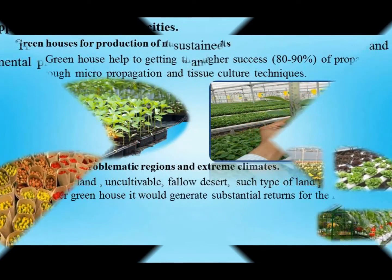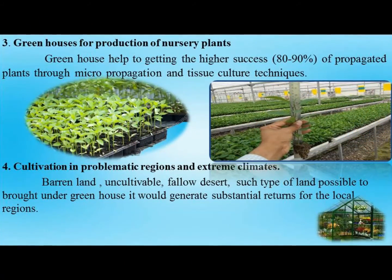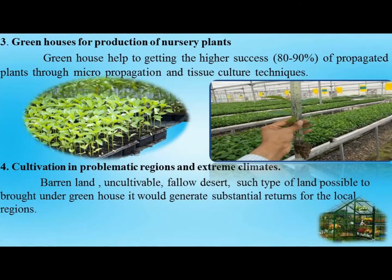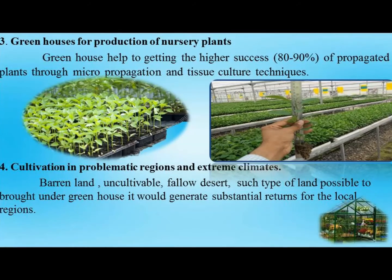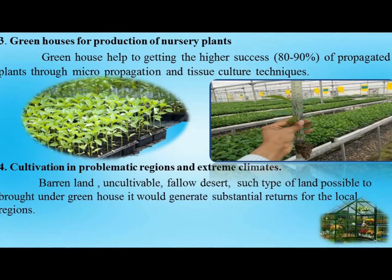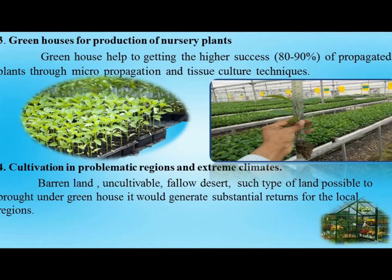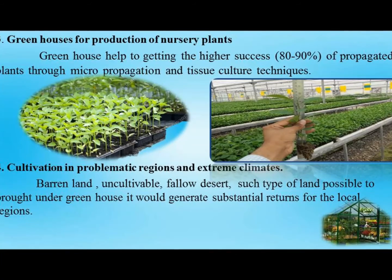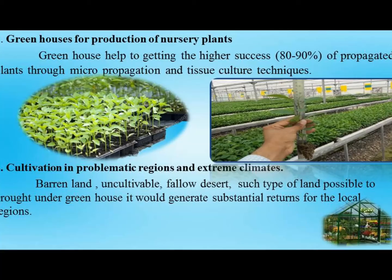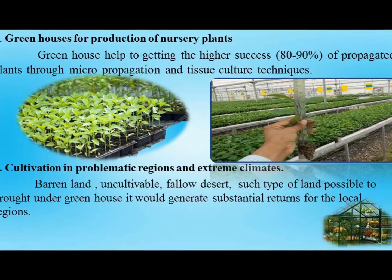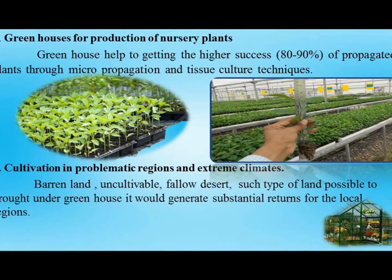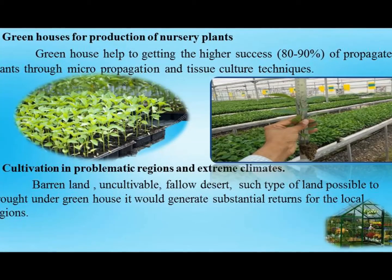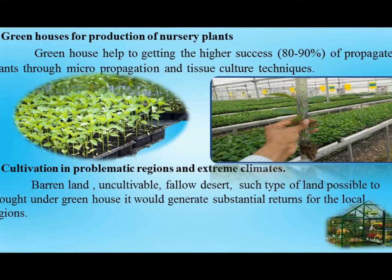The next importance is greenhouses for the production of nursery plants. There are various designs of greenhouses like polyhouse, glass house, lath house, or shade nets, which are used commercially for raising vegetable seedlings and ornamental seedlings. Through these designs, modification of environmental factors is possible, which helps in getting superior quality seedlings, higher germination percentage, and higher success of about 80 to 90 percent for propagated plants through micropropagation and tissue culture techniques.